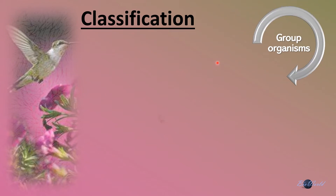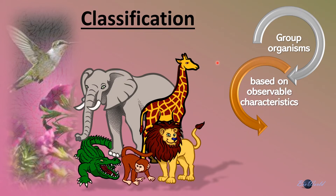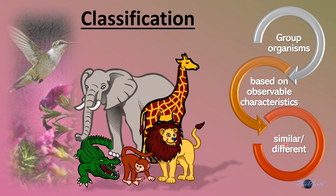Classification is when we group organisms based on observable characteristics. For instance, if I want to classify these five animals, I first will have to identify an observable characteristic. In this example, let's use fur. I will then have to classify these animals based on similarities and differences. Animals that are similar in that they all have fur will fall into one group.